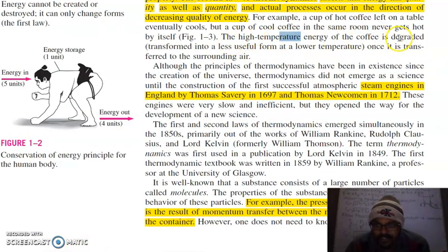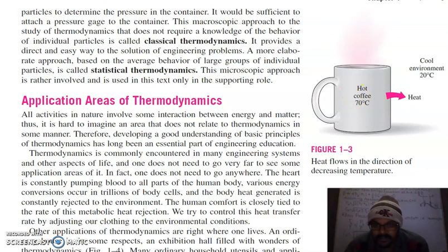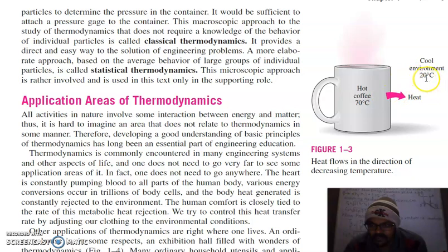The high-temperature energy of coffee is degraded — transferred into a less useful form at lower temperature — once it is transferred to the surrounding air. The hot coffee cup at 70°C contains high-grade, high-quality energy. When it cools down to the environment at 20°C, the heat transferred is low-grade energy. Although energy is conserved in quantity, heat has flowed from high temperature to low temperature, meaning there is a degradation of energy — the quality of energy has decreased even though the quantity remains the same.